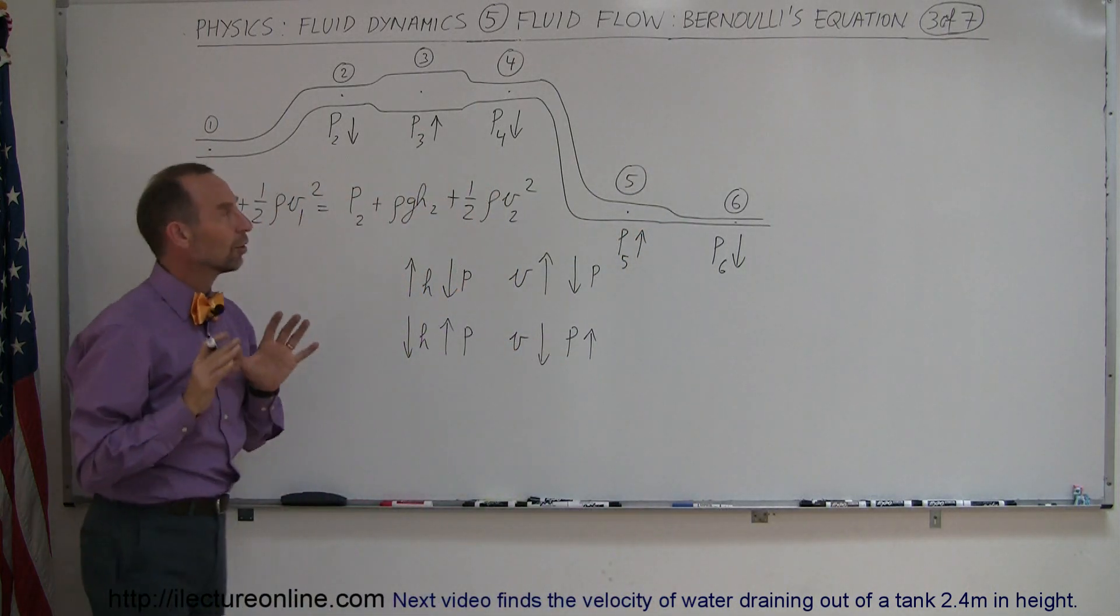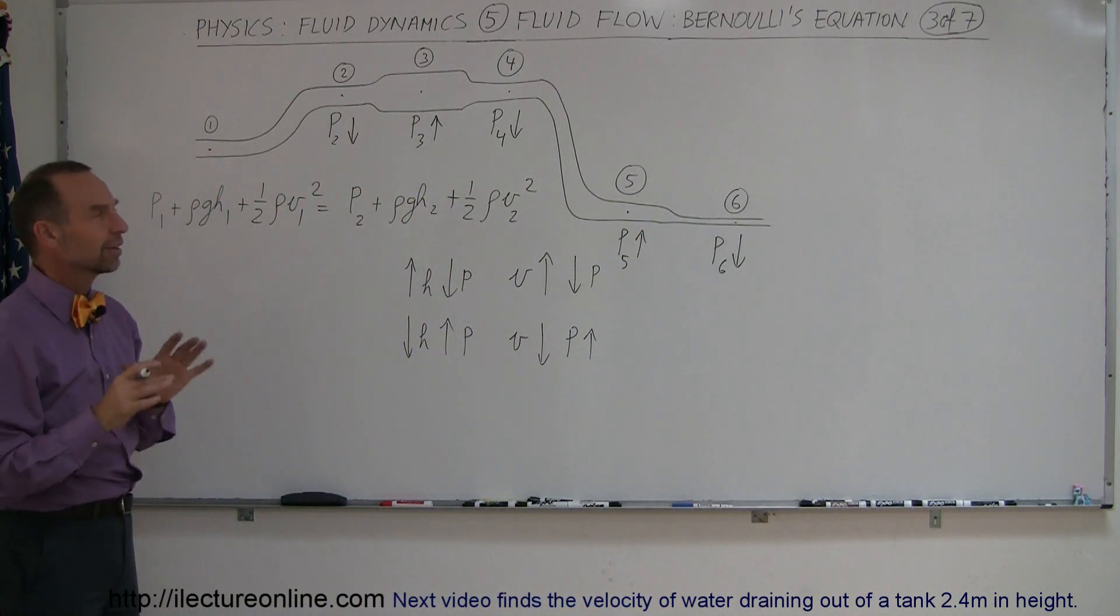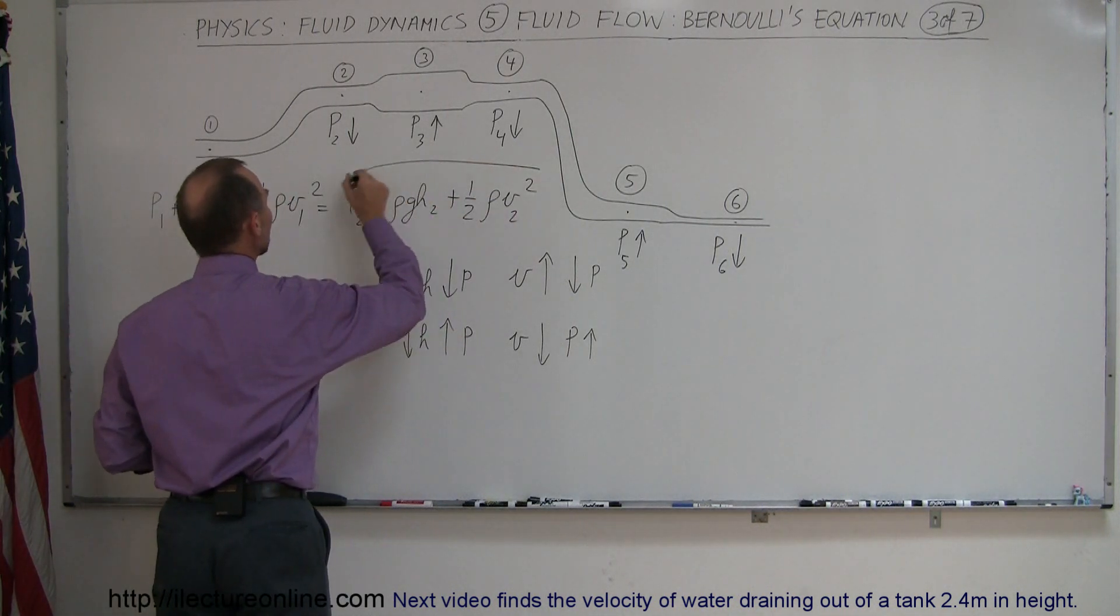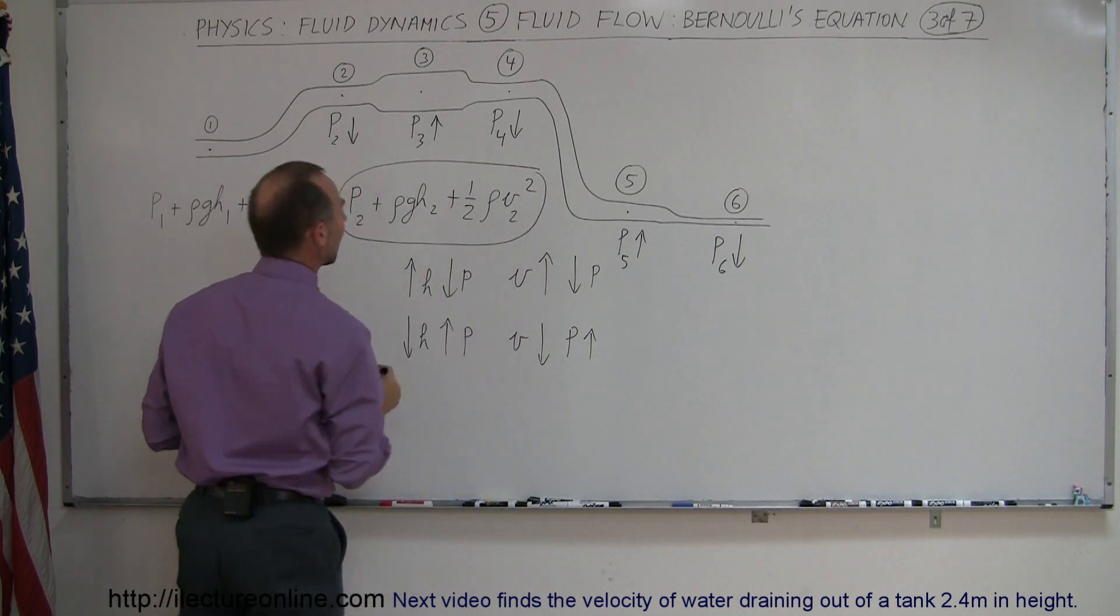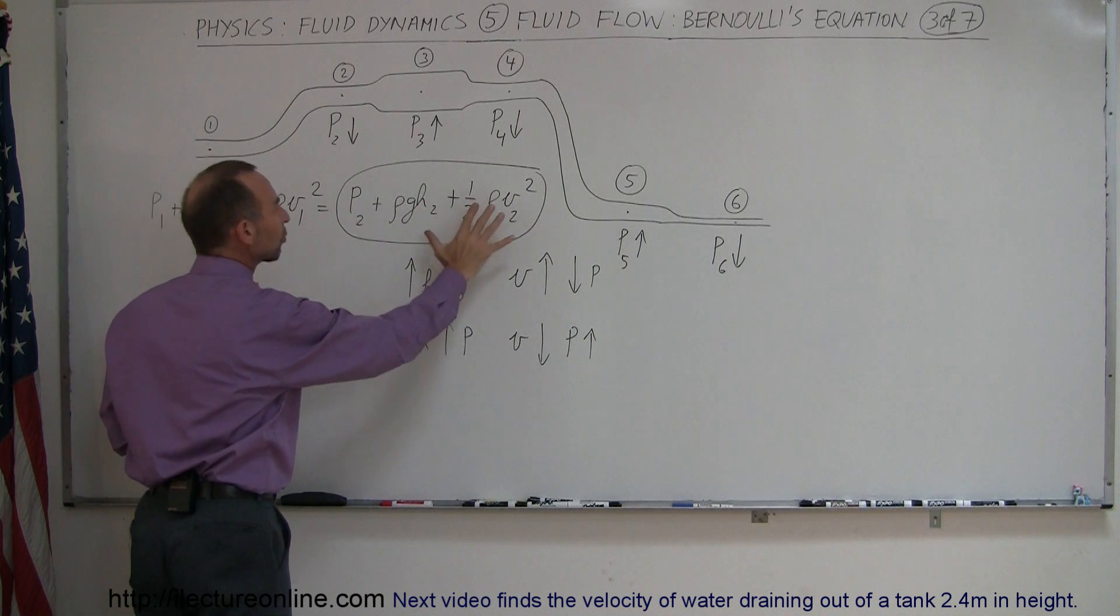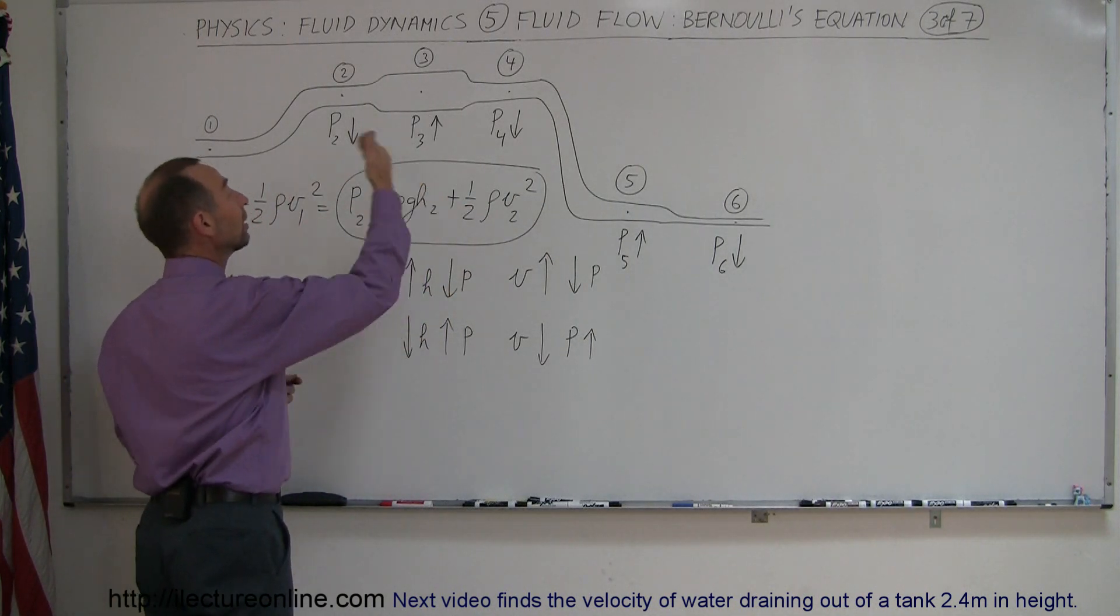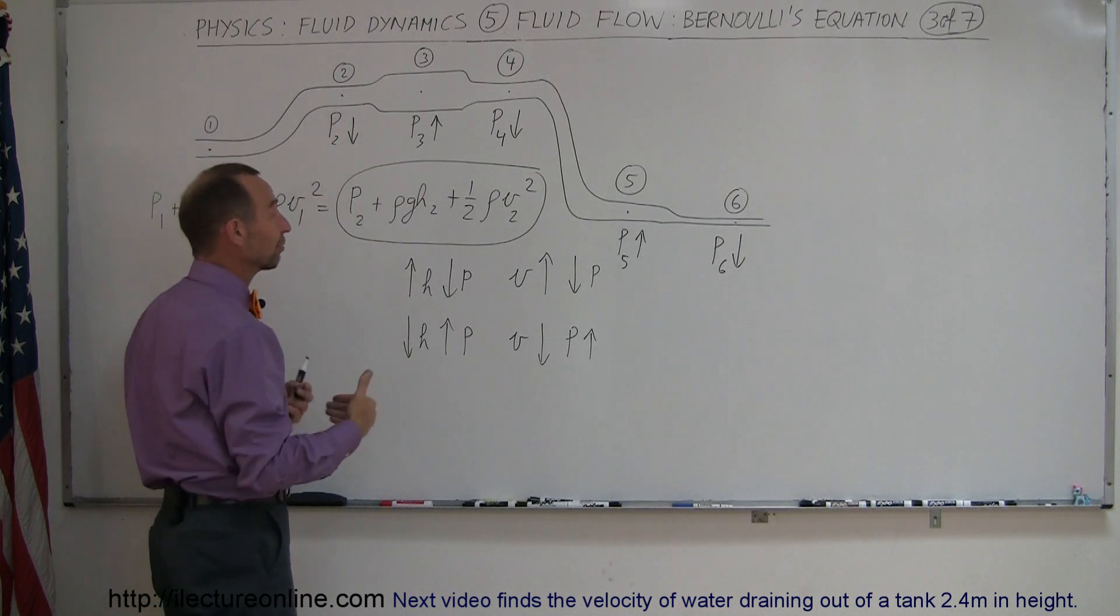Hopefully this helps you look at Bernoulli's equation in a very different way. Simply, again, Bernoulli's equation has three terms on each side of the equation. And Bernoulli said that the sum of those three always stay constant, which means if one goes up, one of the other ones, or maybe both of them, will have to go down.